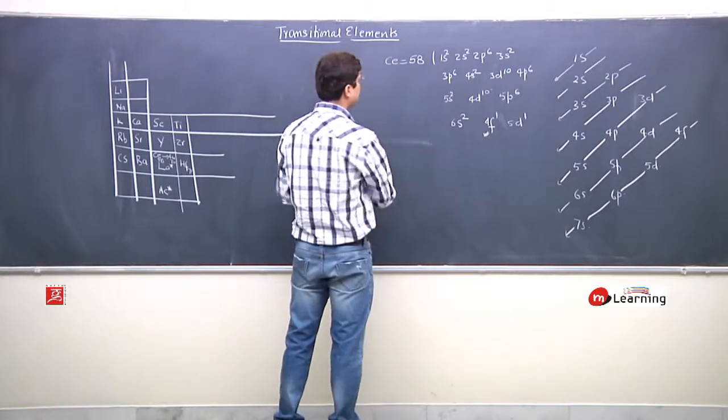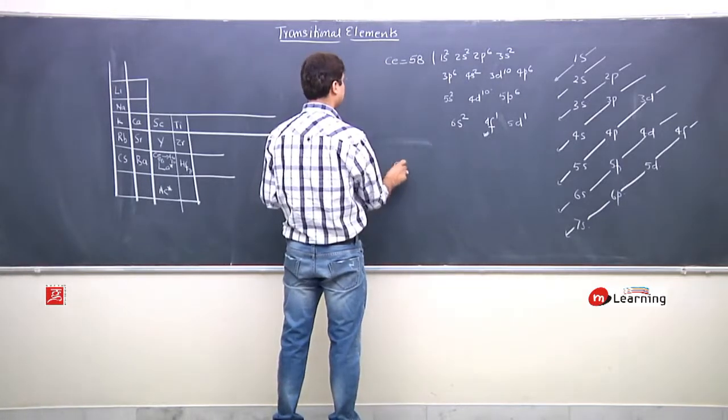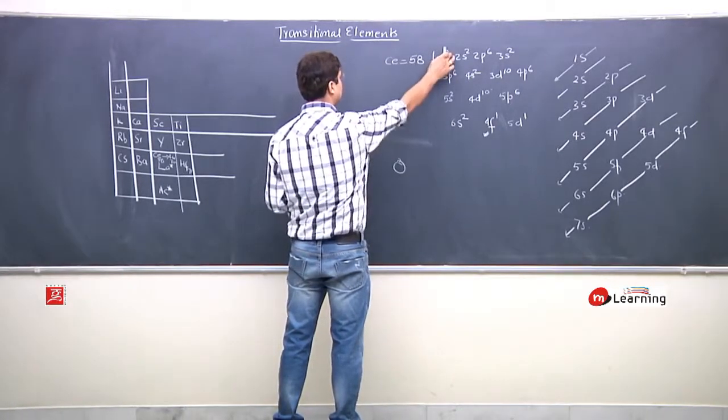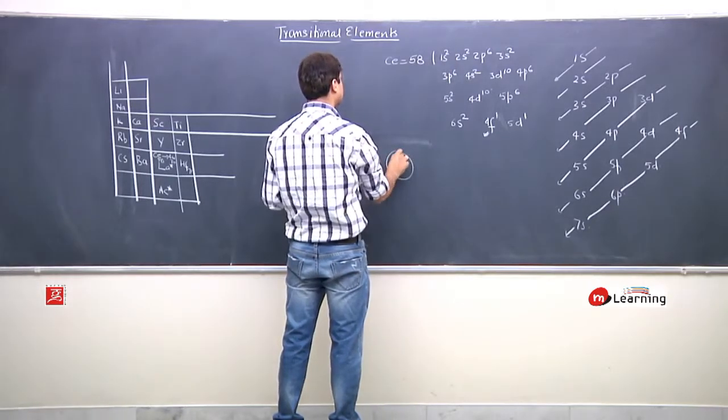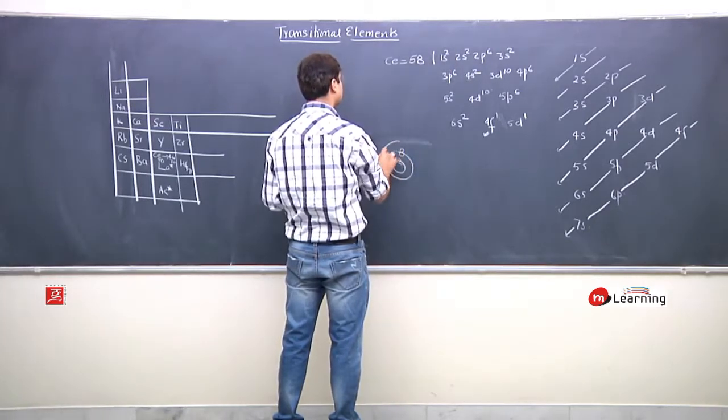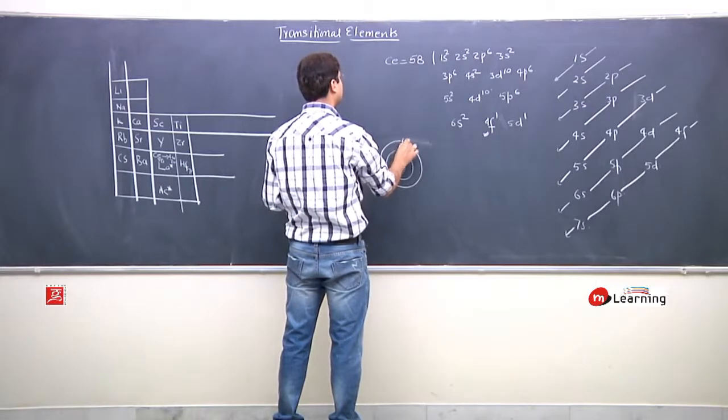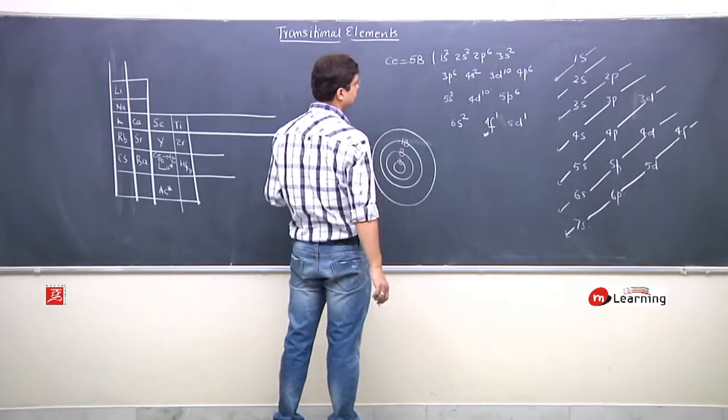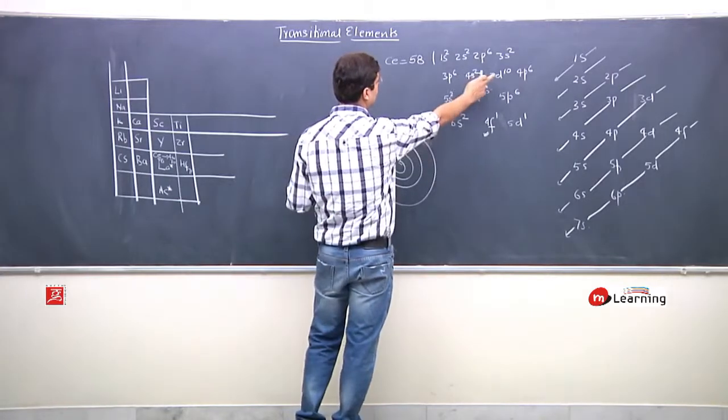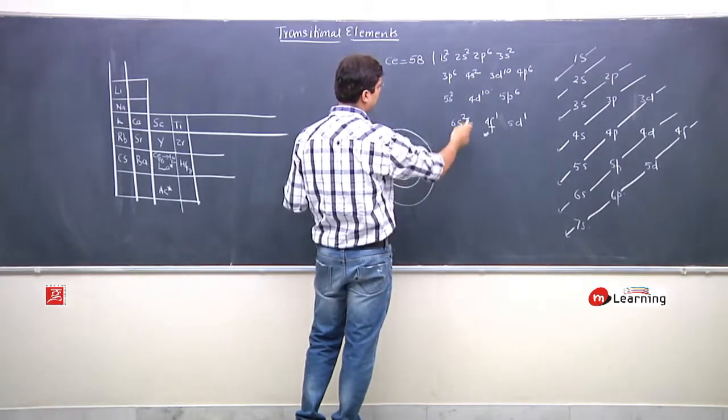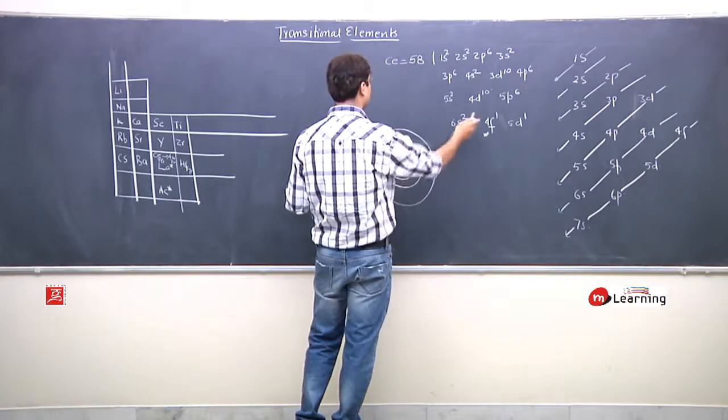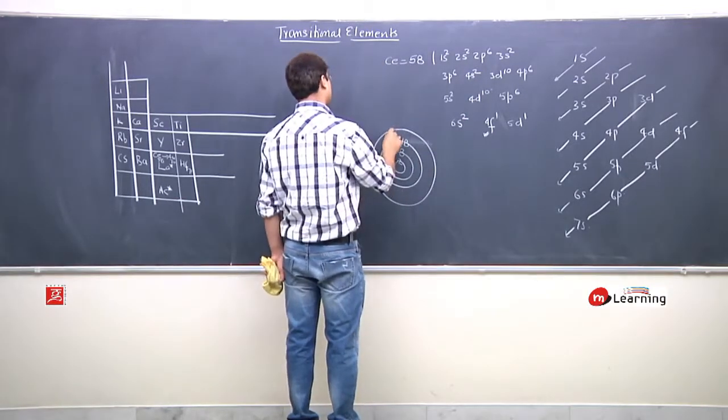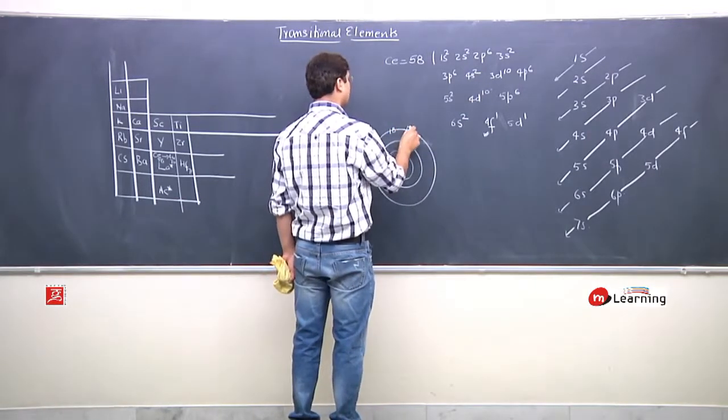So if you fill up it in shells: first, 2 electrons, 1s2 means 2 electrons. Second shell, 8 electrons, 2s2 2p6. Third shell, 18 electrons, 3s2 3p6 3d10. Fourth shell, 4s2 4p6 4d10, then 18 here, and 4f1.